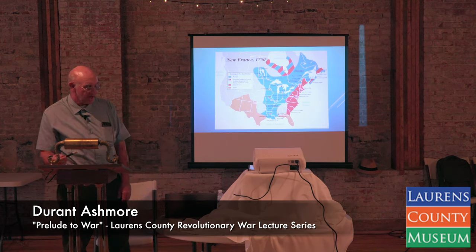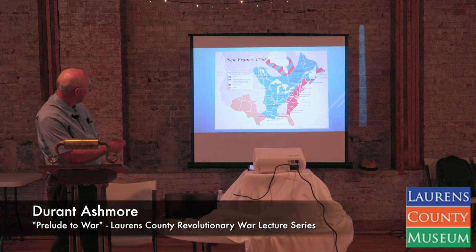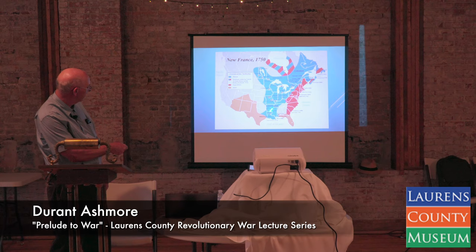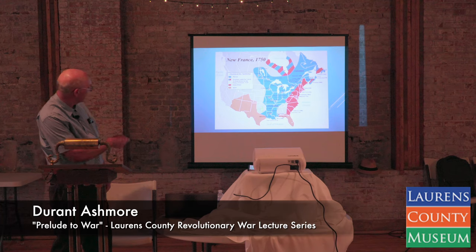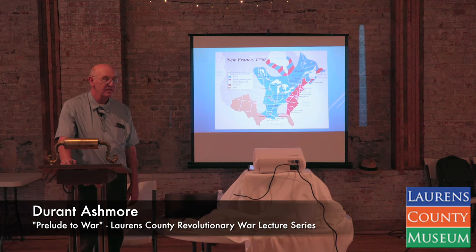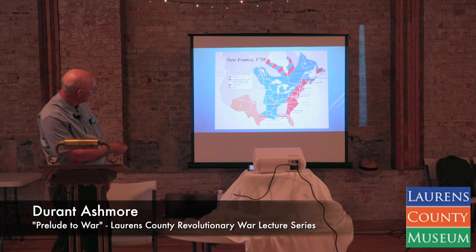Another problem that the colony of South Carolina had was the relationship with the French. This map here shows the French influence in North America in 1750. I will say that this map is misleading — it does show the territory of the French possessions, but the French were primarily in New Orleans, Quebec, and Montreal. While they may have controlled this amount of area, there were only 30,000 Frenchmen in North America. At this time, there was approximately 2 million British colonists, so that's what throws things off a little bit.